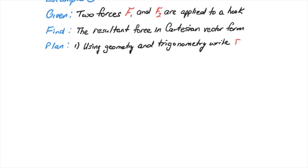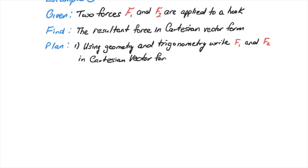We're going to use geometry and trigonometry to write F1 and F2 in Cartesian vector format, in the component format in our i, j, and k directions and perspectives. Then we'll add the two forces by adding the x, y, and z components.